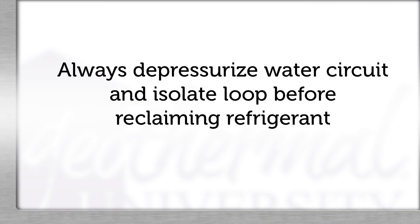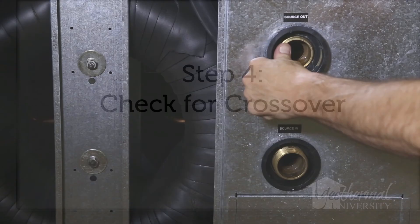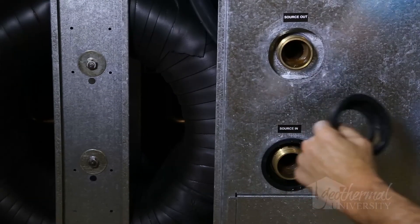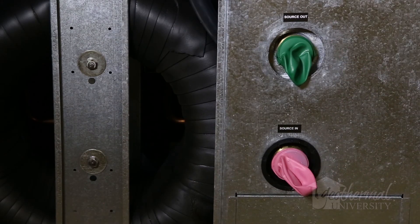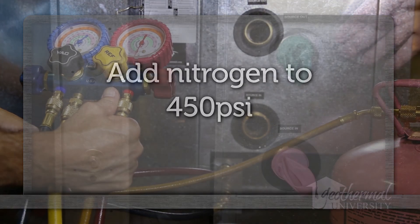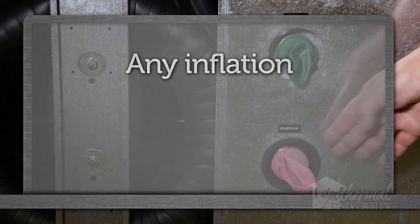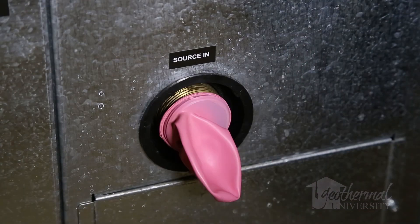Step four is a definitive test method to check for refrigerant to water circuit crossover using balloons. With the water inlet and outlet hoses disconnected, attach the balloons tightly to the water connections. Now pressurize the refrigerant system with nitrogen to 450 PSI. If the balloons inflate even slightly, refrigerant is entering the water side. During the balloon test, it's important to observe the rate of inflation, if any.